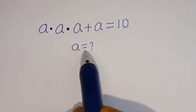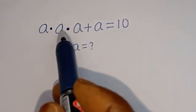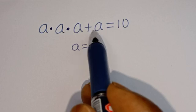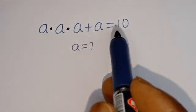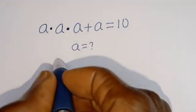Hello. How to solve for A in this equation: A multiplied by A multiplied by A plus A is equal to 10. Solution.